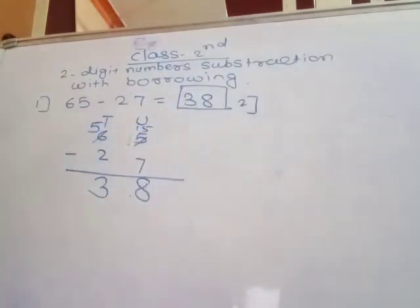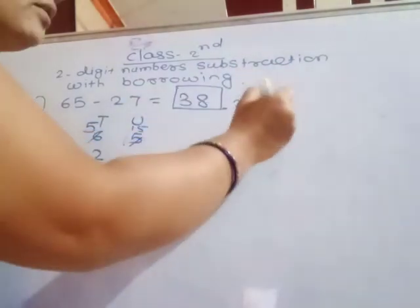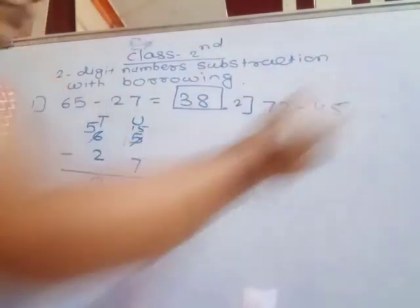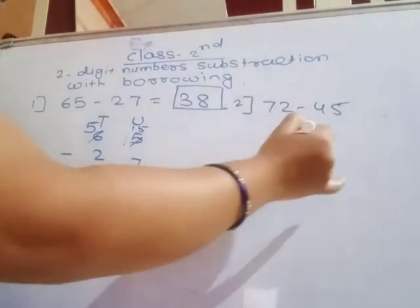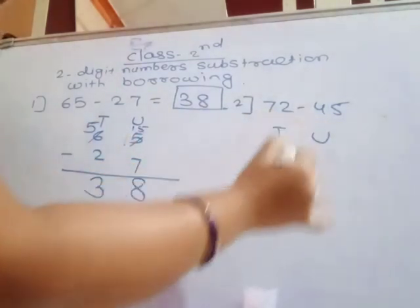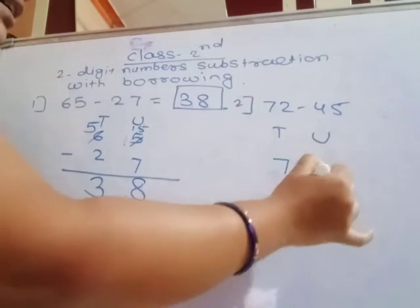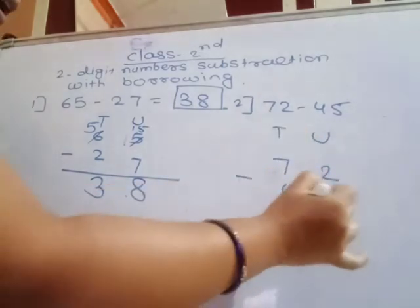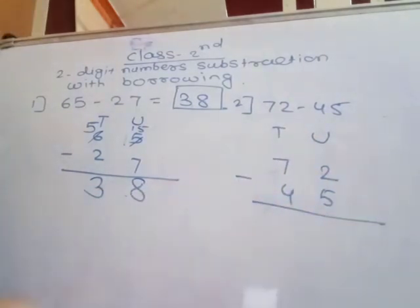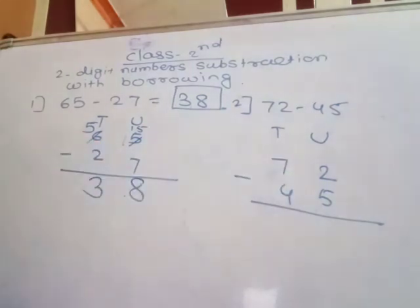Second example: 72 minus 45. Arrange vertically with unit place below unit place and tens place below tens place. 72: tens digit 7, unit digit 2. Below: 45: tens digit 4, unit digit 5.